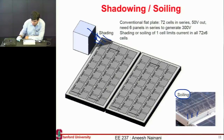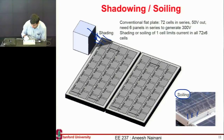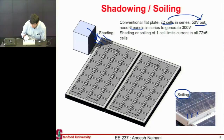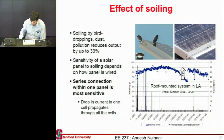Let's say I have this panel — it has 72 cells, which means roughly an output of 50 volts. I'll connect many of these panels in series, say six panels in series, and that will give me 300 volts.